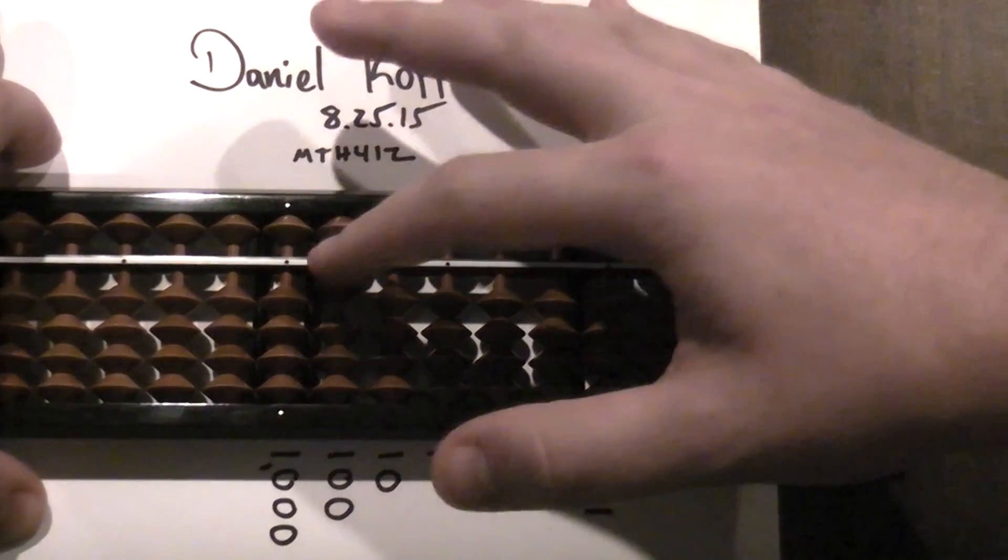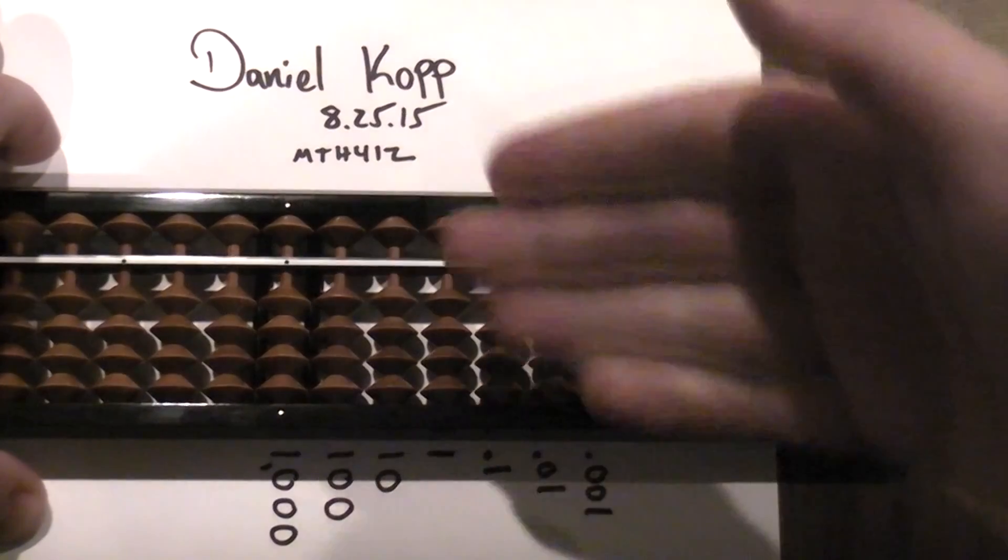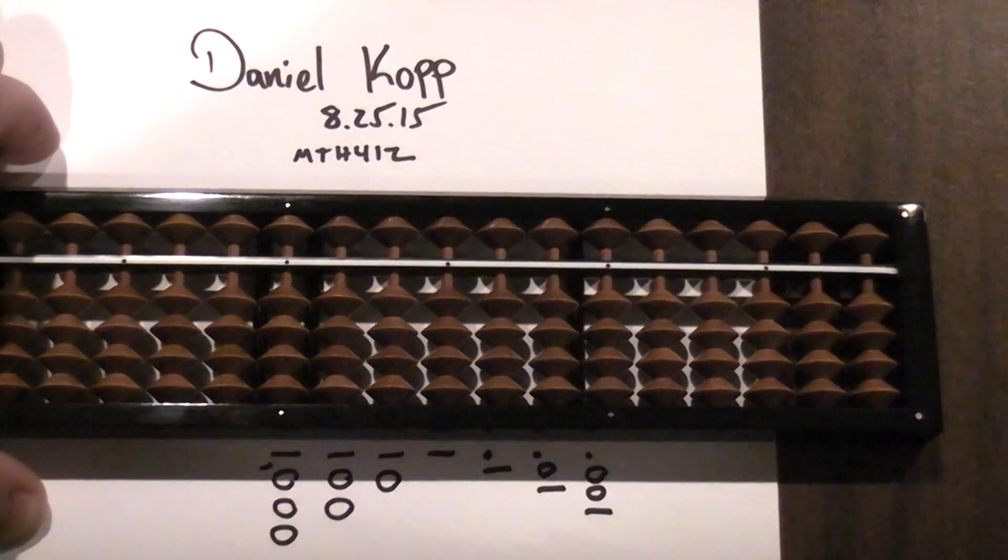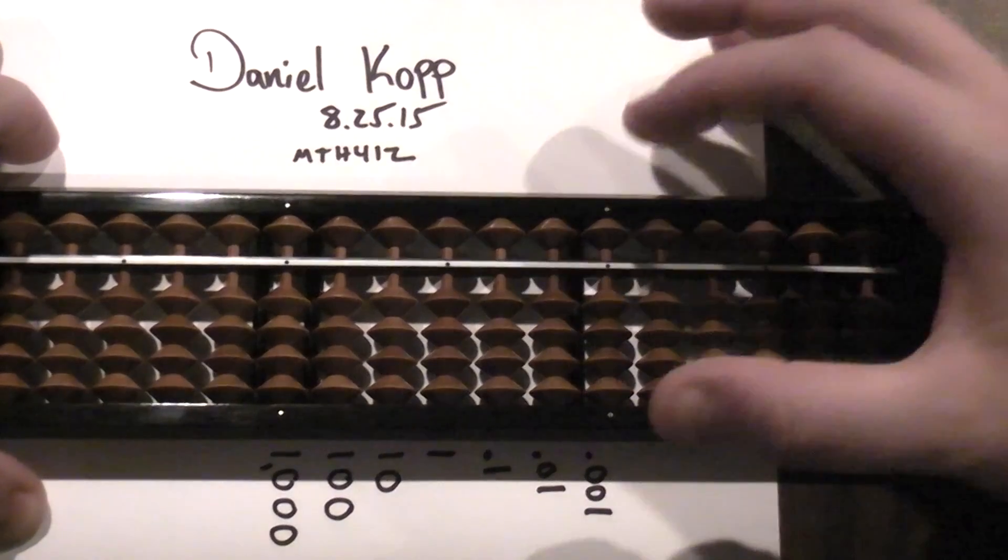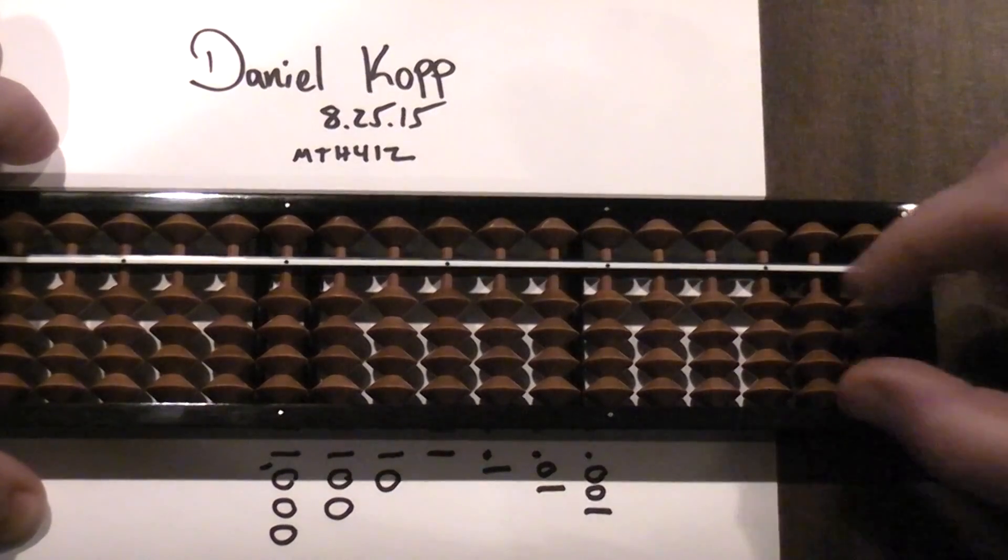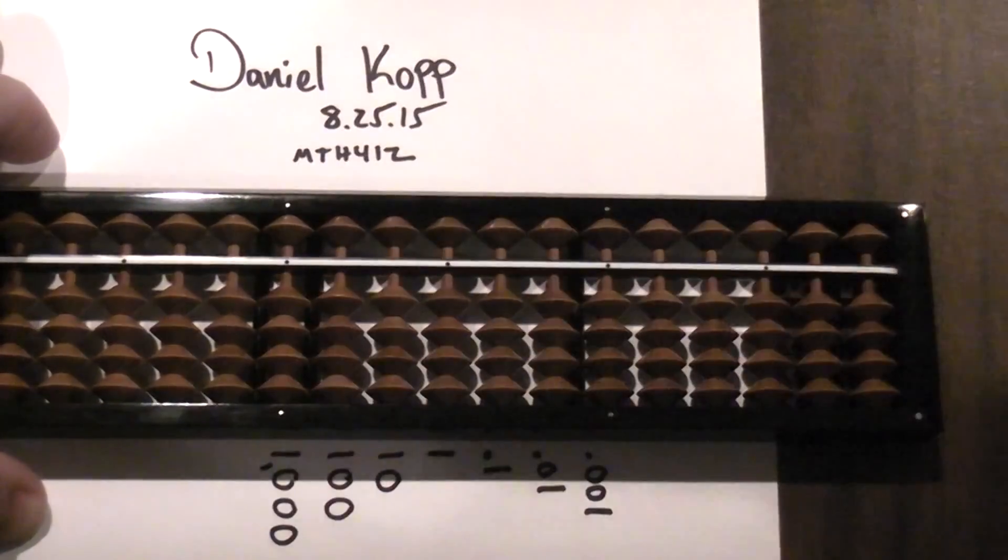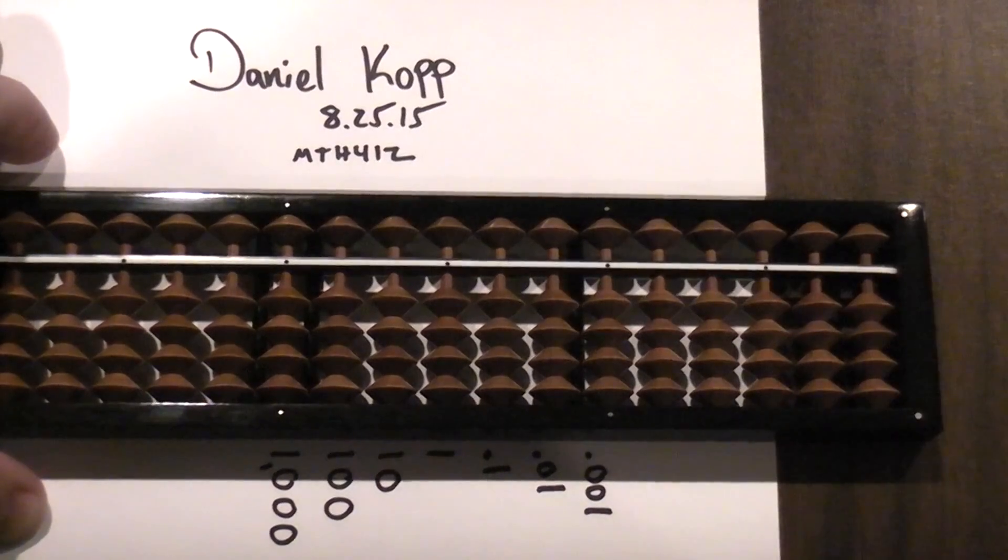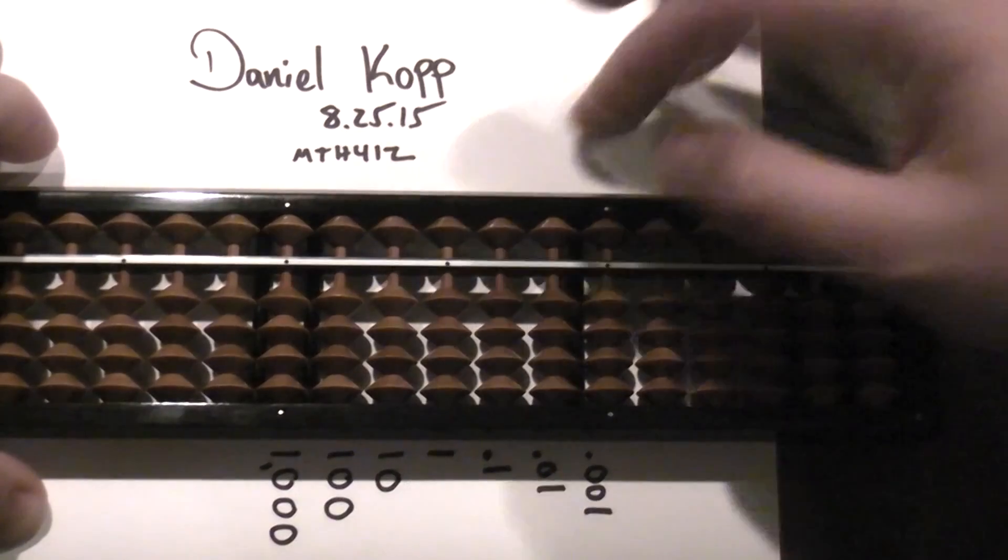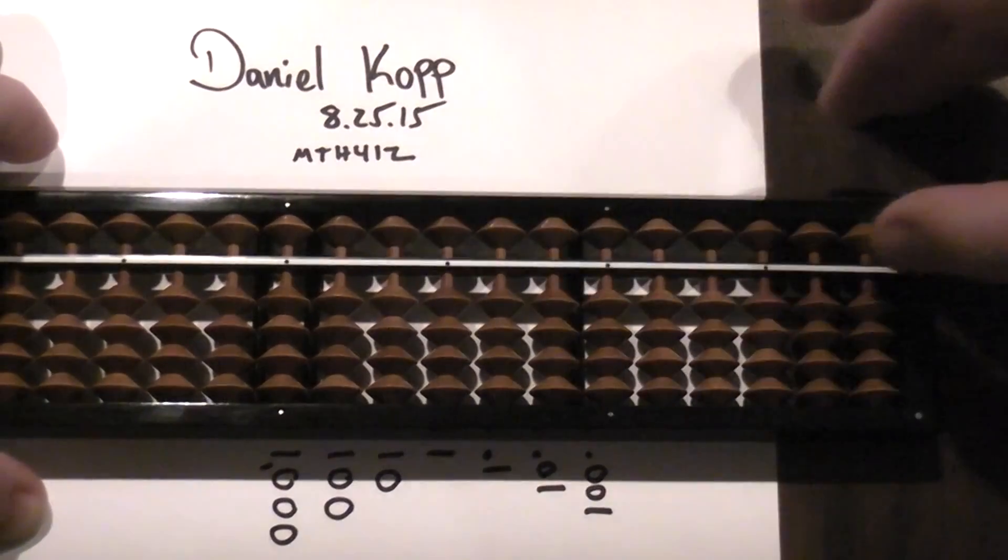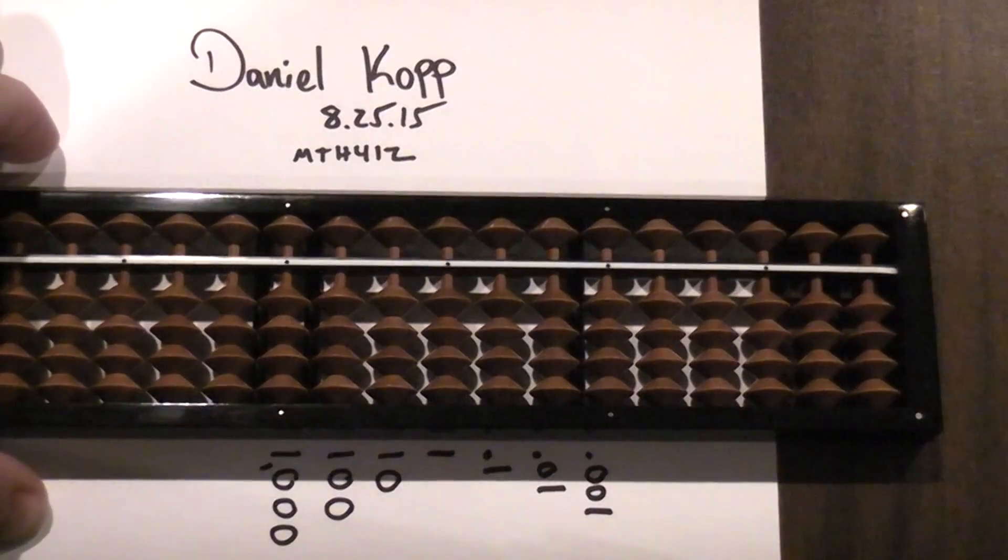How do we count on our soroban? First, let's get familiar with the different parts of the soroban. Up here we have the heavenly beads. Each one of these beads is worth five. Down here we have the earthly beads. Each one of these beads is worth one. Now we only count a bead when it's touching this middle white part, which is called the beam.